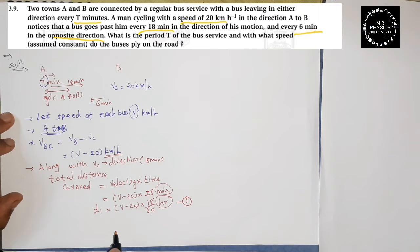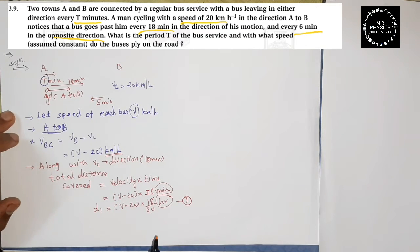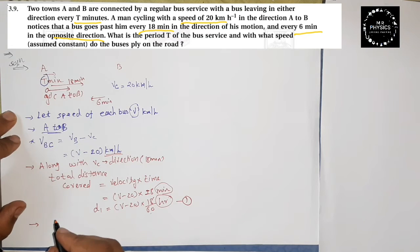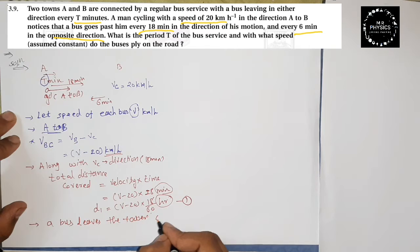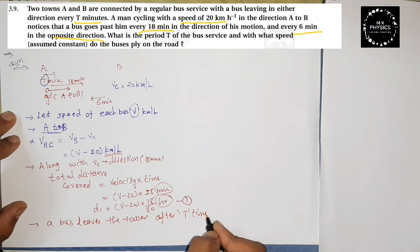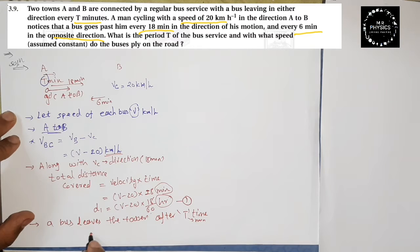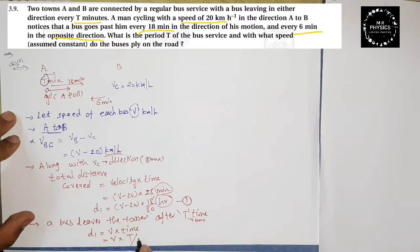Each bus leaves a town after capital T time. The unit of T is minutes. So the total distance covered D1 is also equal to velocity V into T by 60. That is equation number 2.